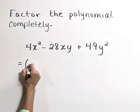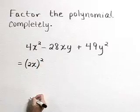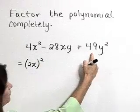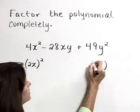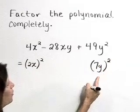4x squared is 2x quantity squared. 49y squared is 7y times itself, or 7y quantity squared.